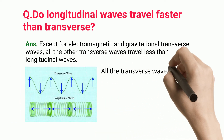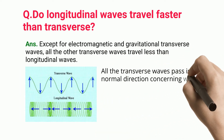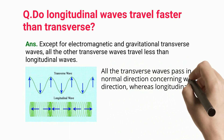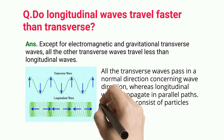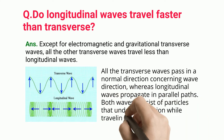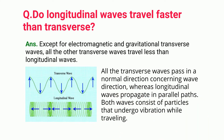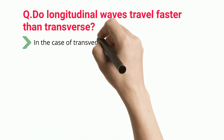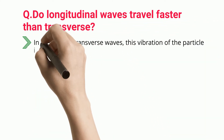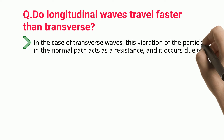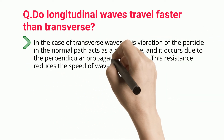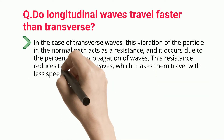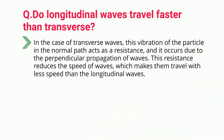All the transverse waves pass in a normal direction concerning wave direction, whereas longitudinal waves propagate in parallel paths. Both waves consist of particles that undergo vibration while traveling. In the case of transverse waves, this vibration of the particle in the normal path acts as a resistance, and it occurs due to the perpendicular propagation of waves. This resistance reduces the speed of waves, which makes them travel with less speed than the longitudinal waves.